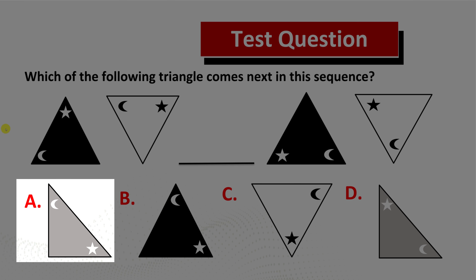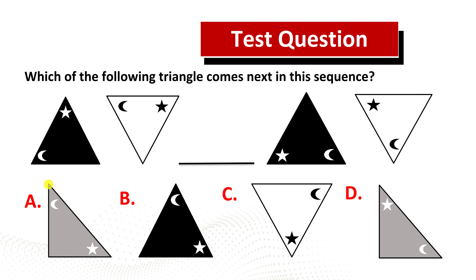Let's recap. Choice A is correct because it matches the pattern of colors, the pattern of smaller shapes, and it also matches the pattern of pointing up in the triangles. This is a really confusing question, and hopefully now you know how to answer similar questions in the test.